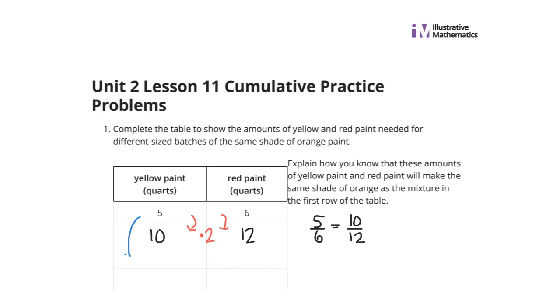If for the next row, I multiplied by 3 from the original, that would leave me with 15 and 18. And that is the same thing as 5 to 6 and 10 to 12 as well.